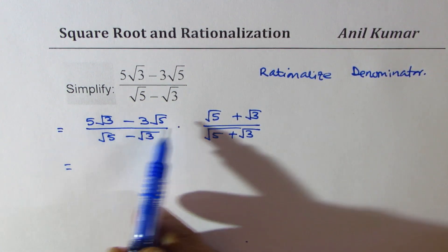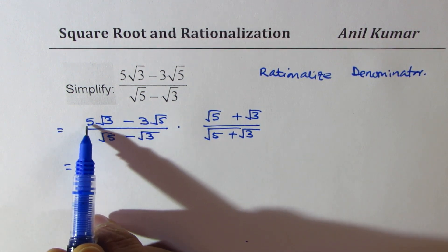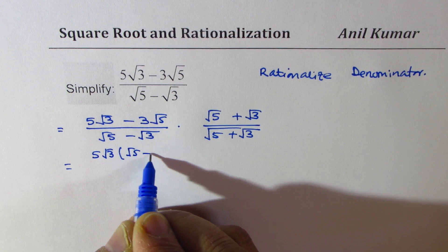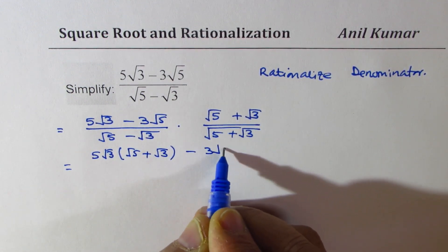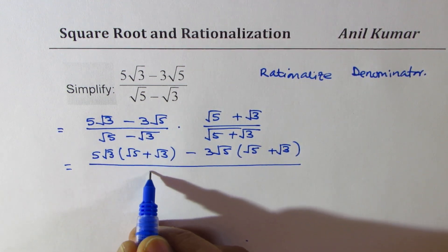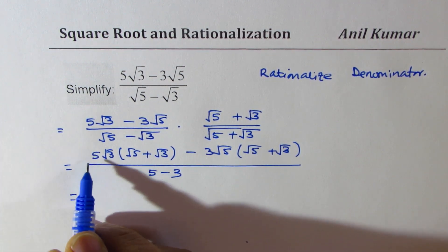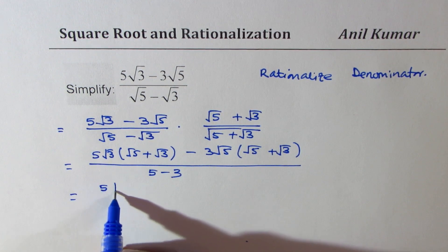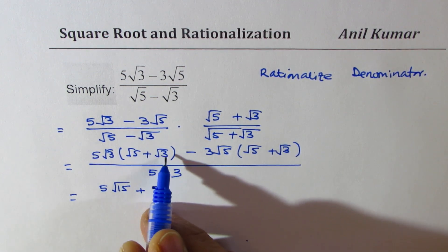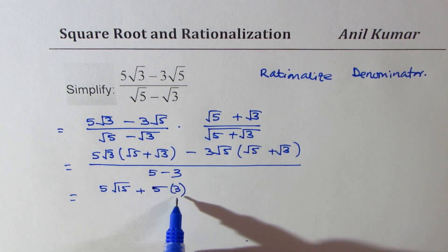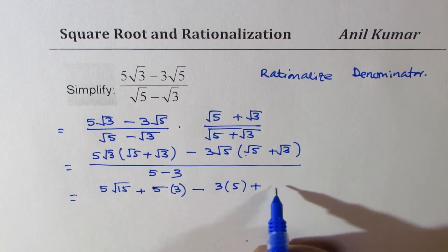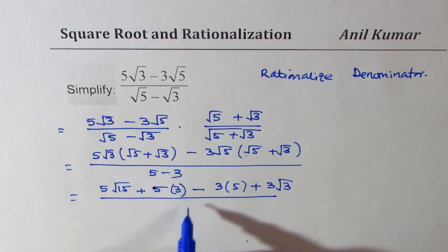Applying the distributive property in the numerator: 5√3 is multiplied by both terms (√5 + √3), and then minus 3√5 is multiplied by (√5 + √3). In the denominator we get the difference of squares: 5 − 3 = 2. Expanding: 5√3 × √5 = 5√15, and 5√3 × √3 = 5×3 = 15. Then minus 3√5 × √5 = minus 3×5 = minus 15, and minus 3√5 × √3 = minus 3√15. Divided by 2.